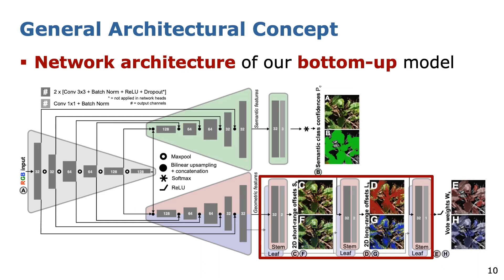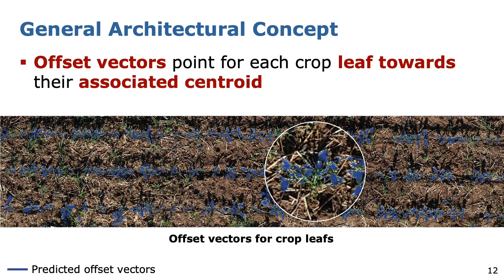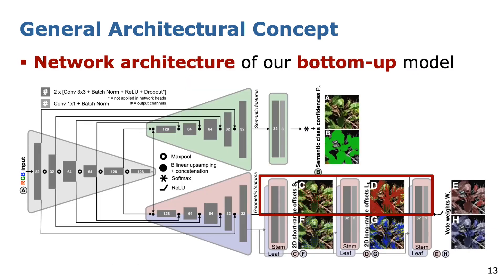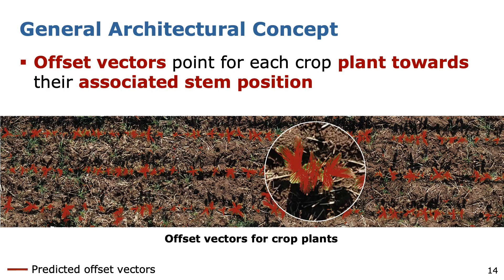In order to perform an instance segmentation, the lower head of our network predicts two sets of offset vectors. We train the network such that the first set of offset vectors points for each pixel of a crop leaf towards the center of the associated leaf instance. We show the predicted offset vectors by blue lines and emphasize that they point towards the centroid of each leaf instance. Additionally, we train the network such that the second set of offset vectors points for each pixel of a crop plant towards its associated stem position. We show the predicted offsets by red lines and emphasize that they point towards the stem of each plant instance.